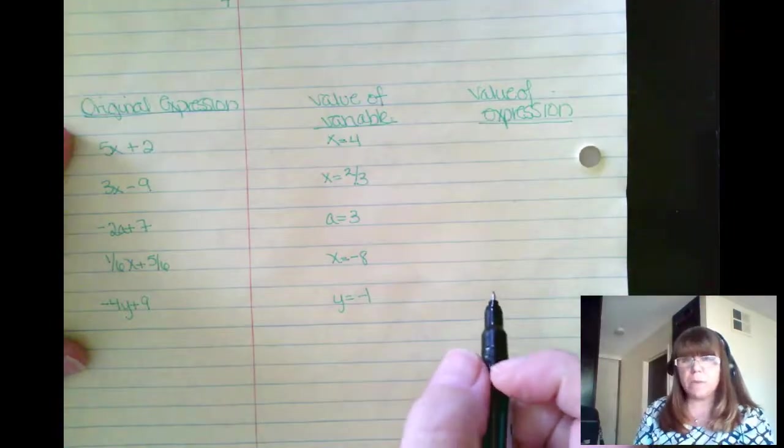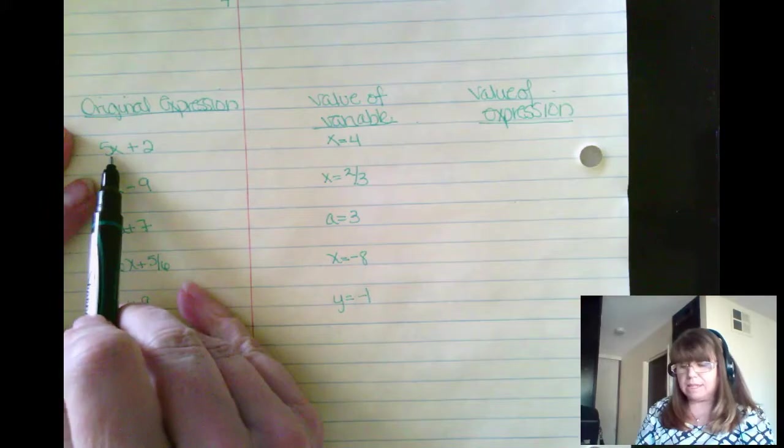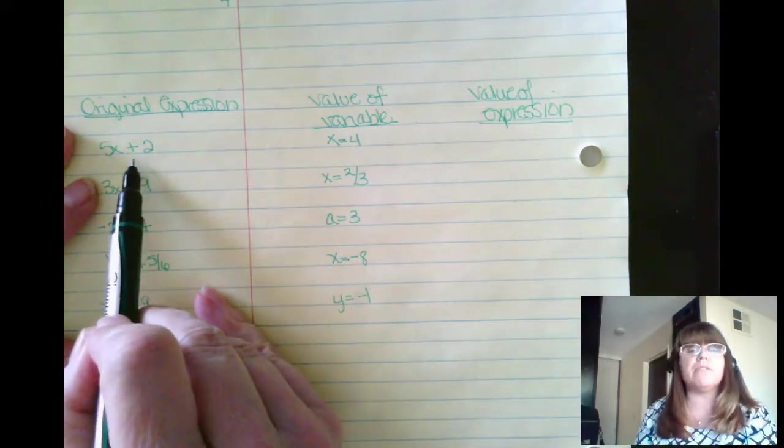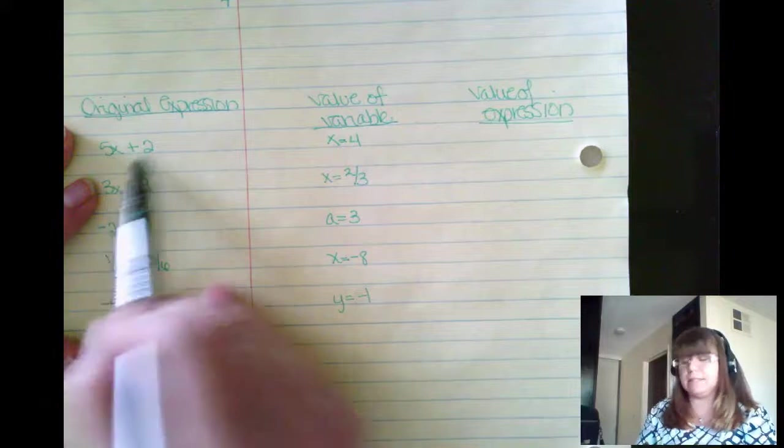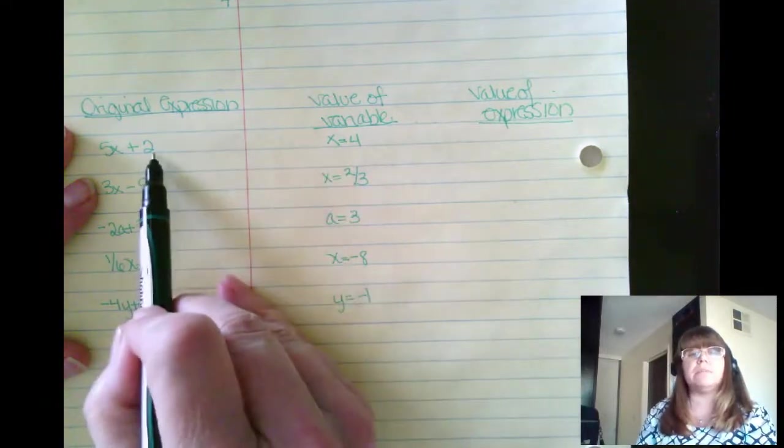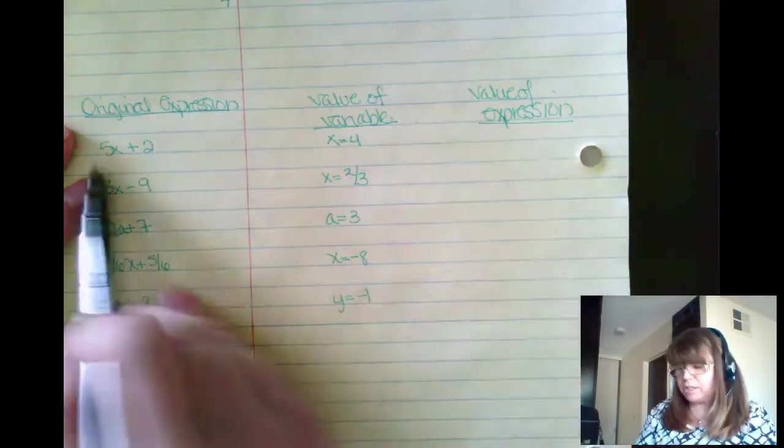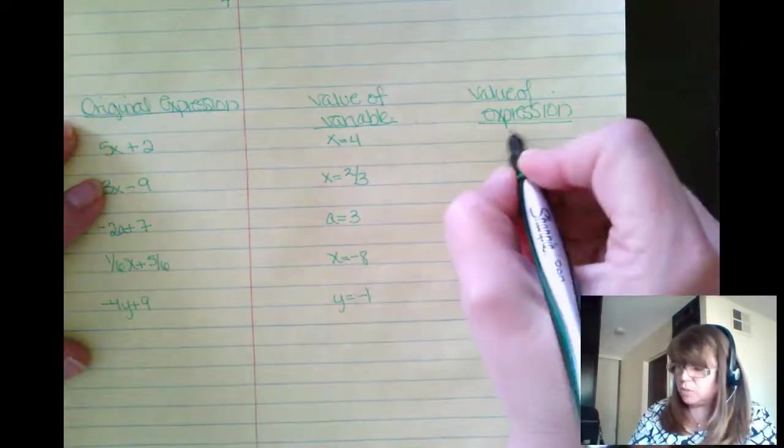Now let's try a couple more of these. So I have 5x plus 2. And I'm going to give you the value of my variable x when x is 4. So let's plug it in. 5 times 4 is 20 plus 2. So the value of my whole entire expression is going to be 22.